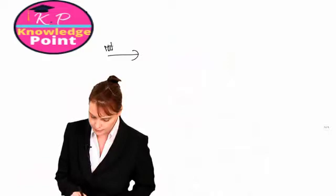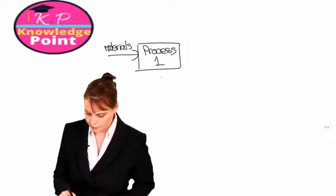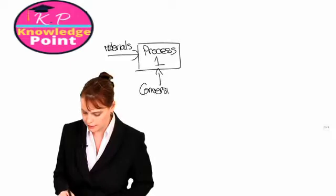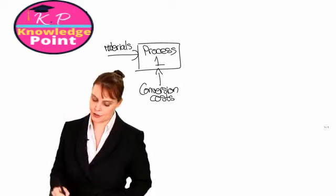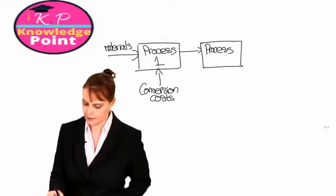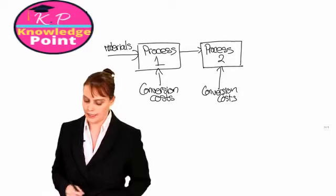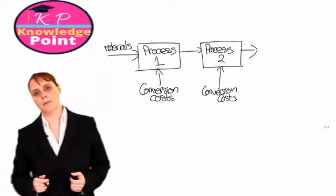When we first started looking at process costing, we said that at the very start of our process, we will input some materials into the first process, and then those units will go through a number of different processes before they become our output. We looked at a diagram like this — we input materials into process 1, incur some conversion costs, and after units are completed they are sent to the next process where we incur additional conversion costs. At the end of process 2, we will have our output to finished goods.